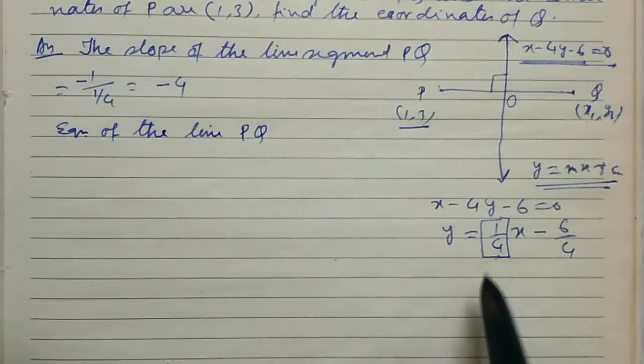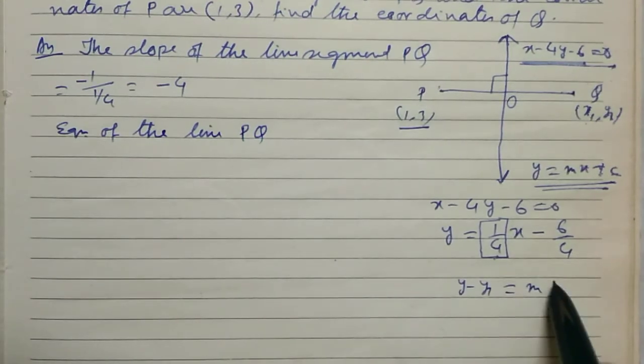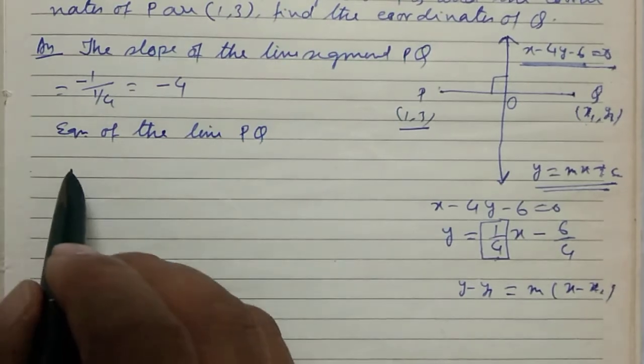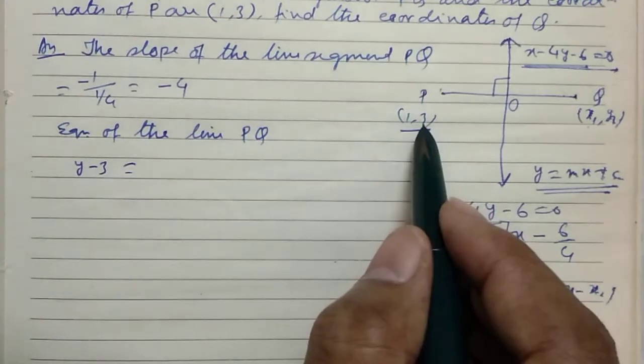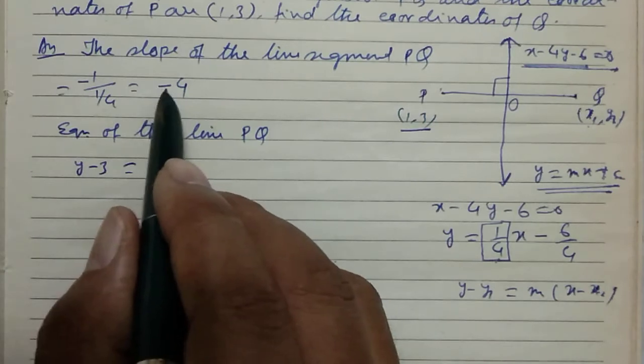Hence, equation of the line PQ. What is the formula? Here, y minus y1 equals m times x minus x1.